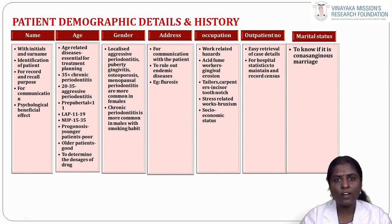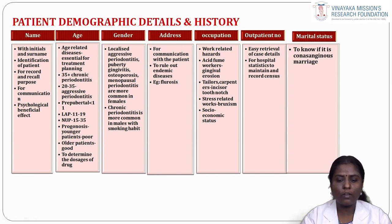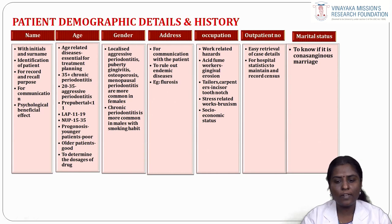Occupation: there are certain work-related hazards. Acid fume workers have more gingival erosion. Tailors and carpenters have incisive tooth notches. Stress-related work always leads to bruxism, and it also helps us to know the socioeconomic status of the patient. The outpatient number helps easy retrieval of case details, for hospital statistics, and to maintain and record census. Marital status is noted to determine if there is any consanguineous marriage between families.